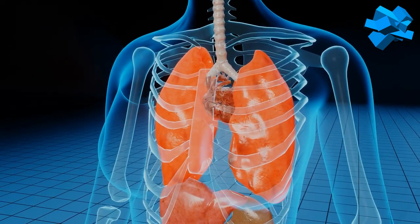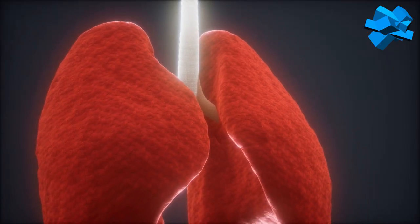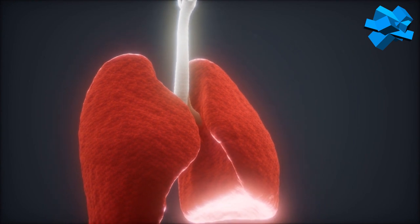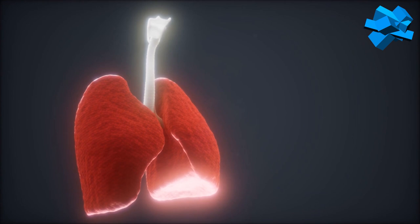Mesothelioma tumour cells may be epithelioid, sarcomatoid or fibrous, or mixed biphasic. Lung cancer occurs when abnormal cells in the lung grow in an uncontrolled way, and it often spreads or metastasizes to other parts of the body before being detected. While smoking is the primary risk factor for lung cancer, exposure to asbestos exacerbates the risk significantly and is an interacting factor.